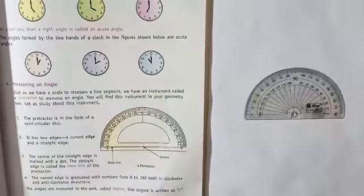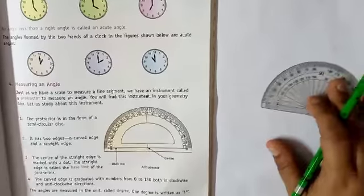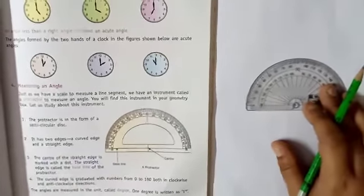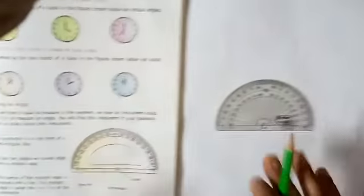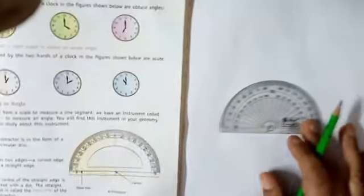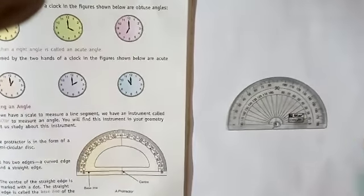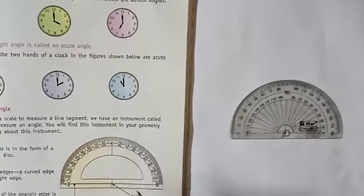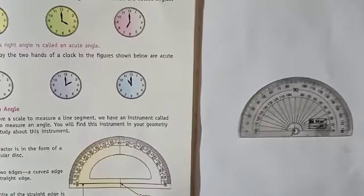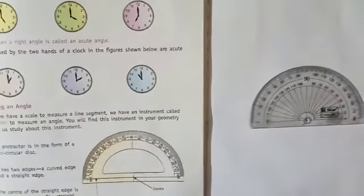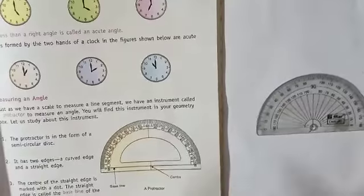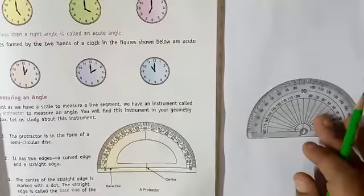Hame apna instrument geometry box me milta hai. And I hope you all have a geometry box. So I will first explain this instrument well — ki isko hum kaise use karte hai. So students, open page number 115 in your book. Is book me aapke is chapter me pure protractor usi type se draw kiye hue hai. Isi ke through main aapko achhe se explain kar dunga.